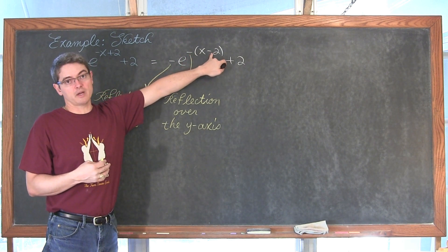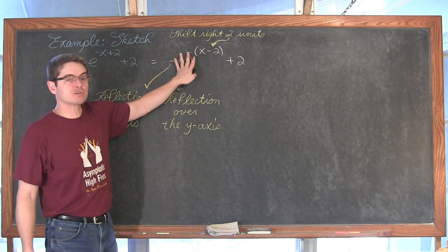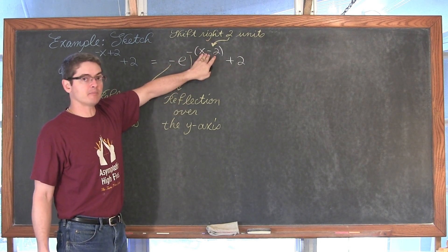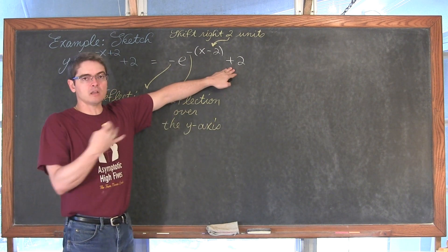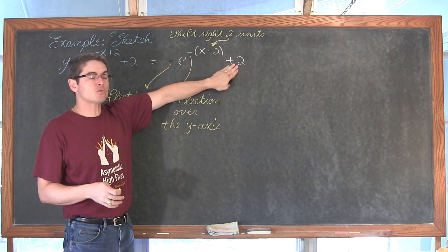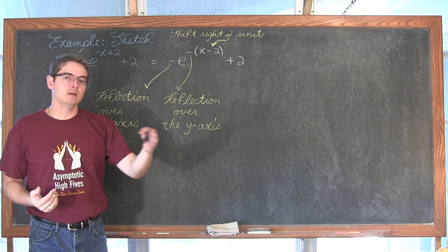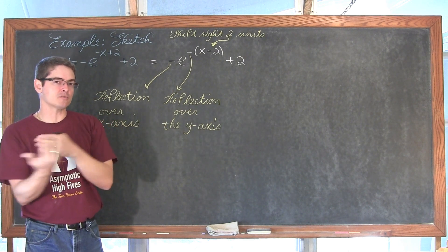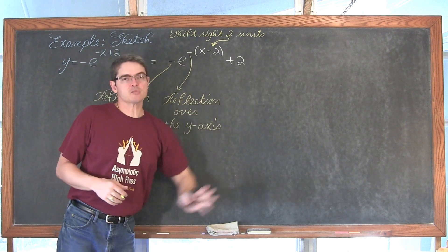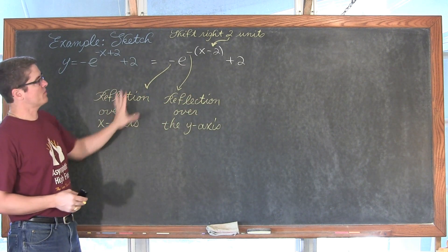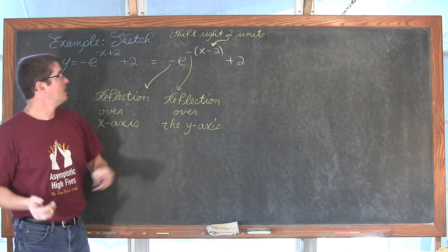So the transformations are: reflection over the x-axis, reflection over the y-axis, shift right 2, and shift up 2. I prefer to apply reflections first, then horizontal movement, then vertical movement. I'll draw an xy-axis and apply each transformation in sequence to produce the final sketch of this function.